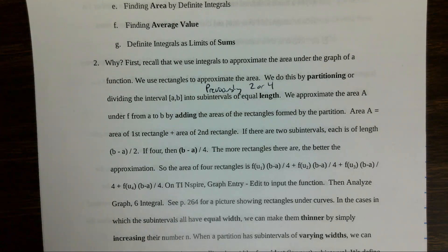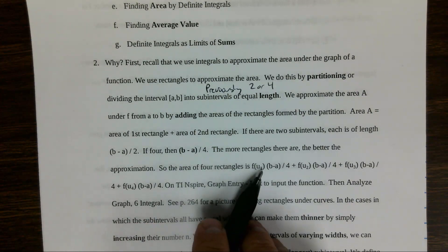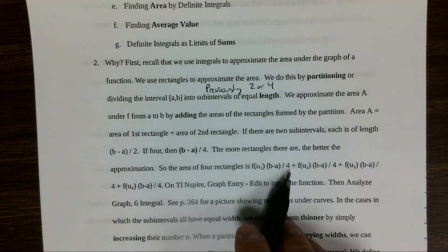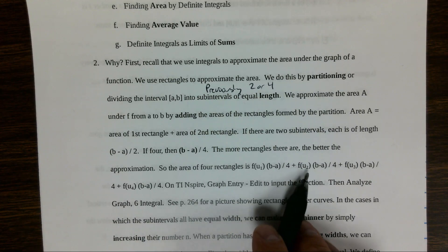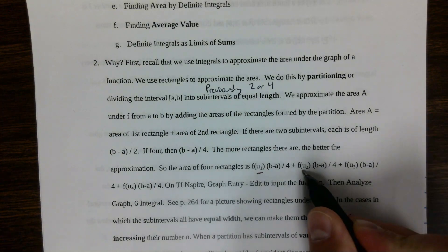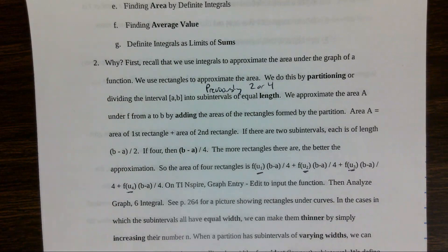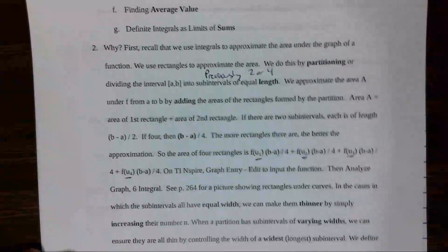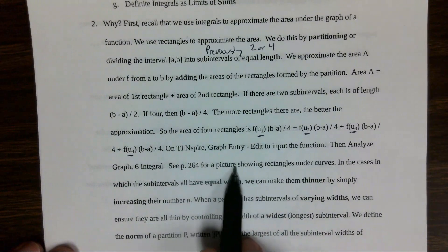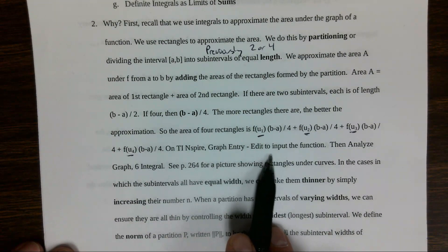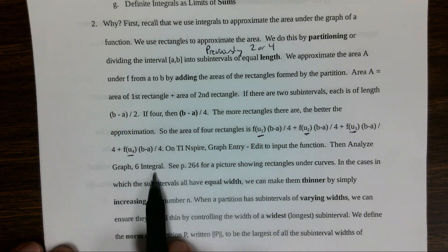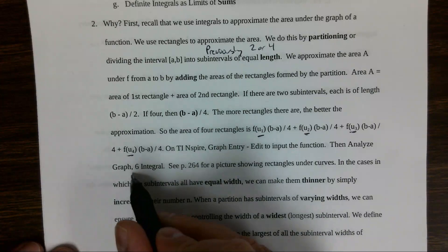Now we're using sigma notation. The area of four rectangles would be: the function at the first point divided by 4, plus the second divided by 4, plus the third divided by 4, plus the fourth divided by 4. On the calculator, you can go to Graph > Entry/Edit to input the function, then go to Analyze Graph and choose 6 for integral.